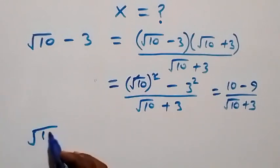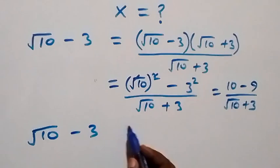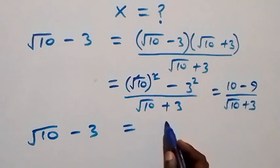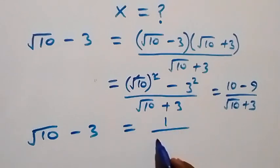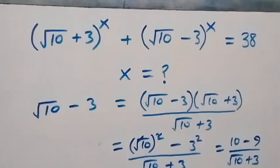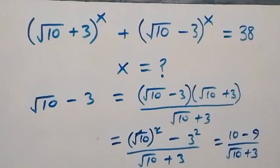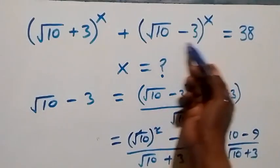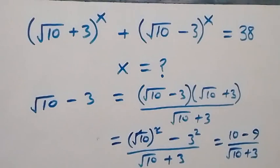So which implies that root 10 minus 3 can now be written as 1 over (root 10 plus 3). Now in this equation we can rewrite it, and this will become 1 over (root 10 plus 3), raised to power x.